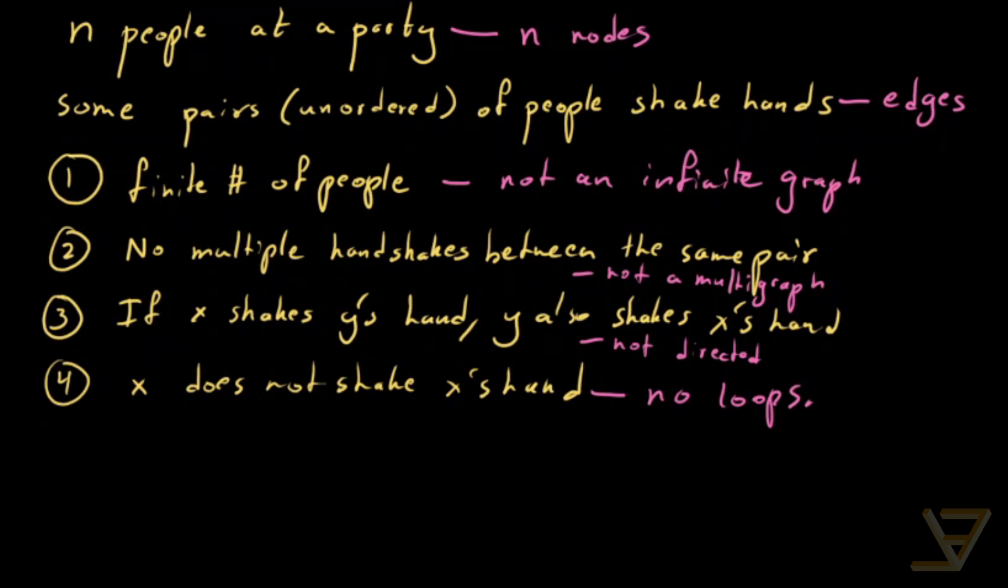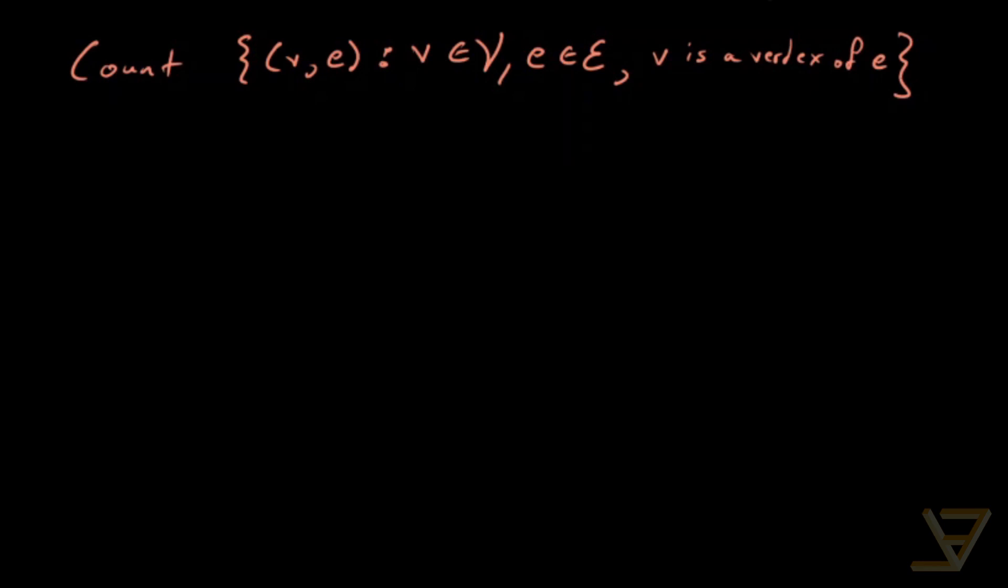So suppose we have a graph like this. What we're going to do is count the set {(v,e): v∈V, e∈E, v is a vertex of e}. So let me draw a graph for you. Suppose we have one, two, three, four, five people, and some of them shake hands. So these two shake hands, these two shake hands, and these two shake hands. The other pairs don't shake hands. What we're going to be doing is counting the number of vertex and edge pairs that are adjacent to each other.